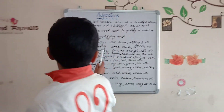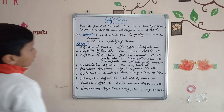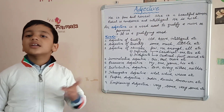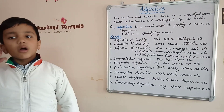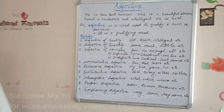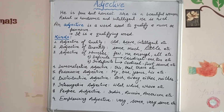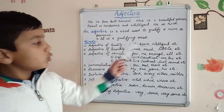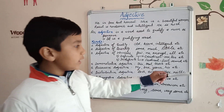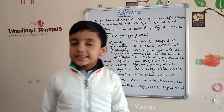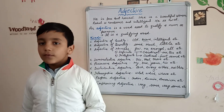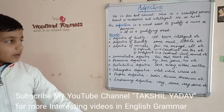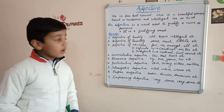Third, adjective of number. Adjective of number tells us the number of a noun or a pronoun. For example: few, no, enough, all, several, one, two, fifth, some, etc.